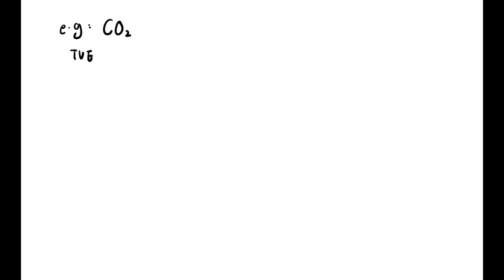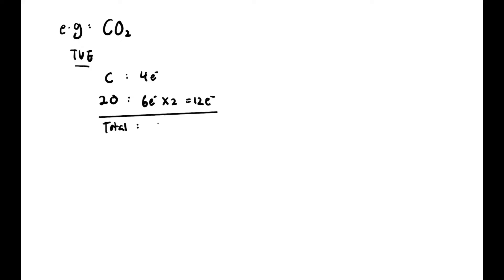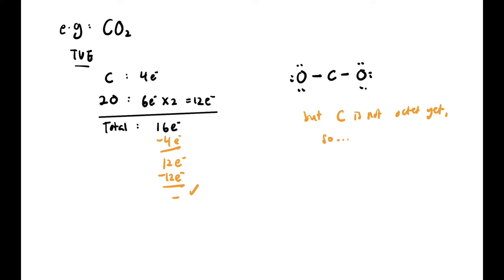Next case: CO₂. TVE — carbon has 4 electrons, two oxygens have 6×2=12 electrons, total 16 electrons. We draw C with two O atoms and form two bonds using 4 electrons, leaving 12. We place 12 electrons on oxygen — all used up. But carbon is not octet yet, even though oxygen is octet. So we erase one lone pair and make a double bond; carbon is still not octet, so we make the other side a double bond too. Now carbon (1–8) is octet and both oxygens are octet. Carbon is happy with two double bonds.